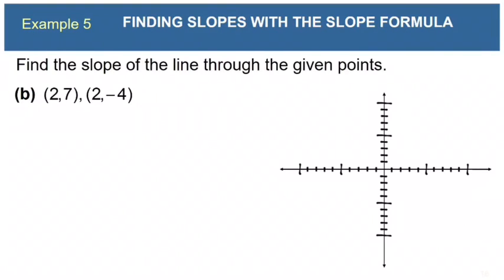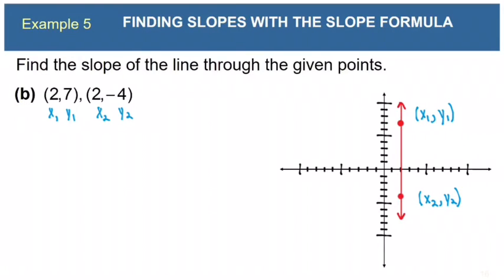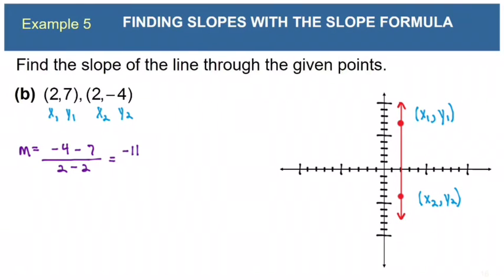Example 5b: the two points are (2, 7) and (2, negative 4). Plotting these, they form a vertical line. Using the formula: m equals (negative 4 minus 7) over (2 minus 2) equals negative 11 over 0, which is undefined. This confirms the slope of a vertical line is undefined.